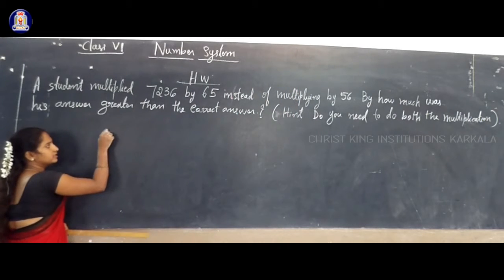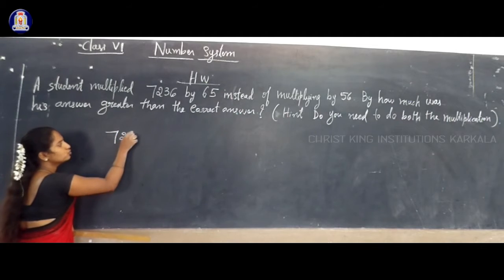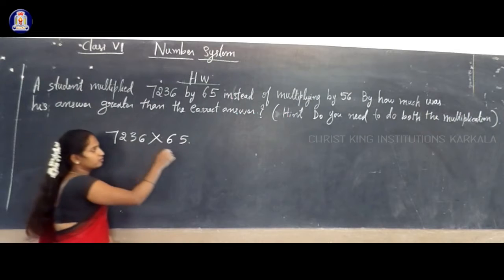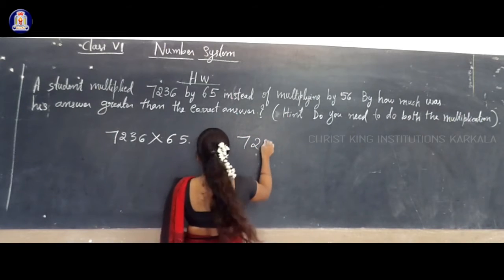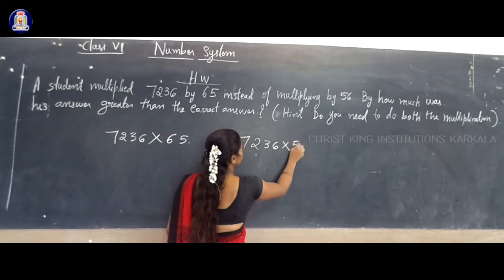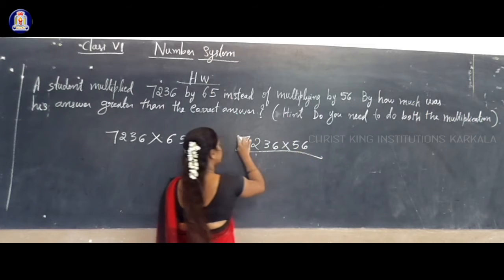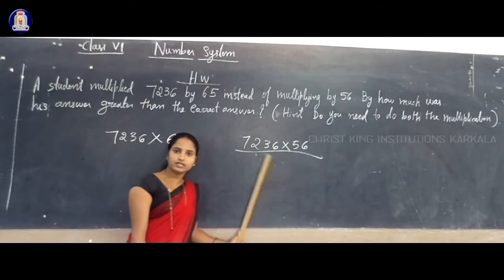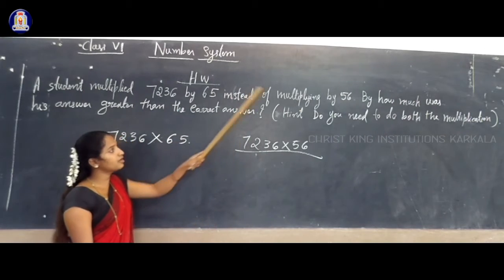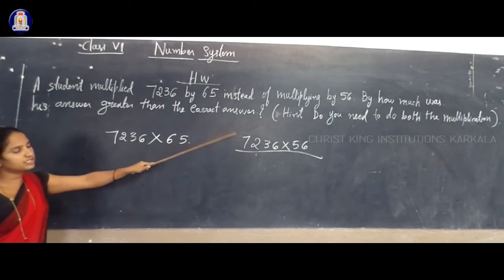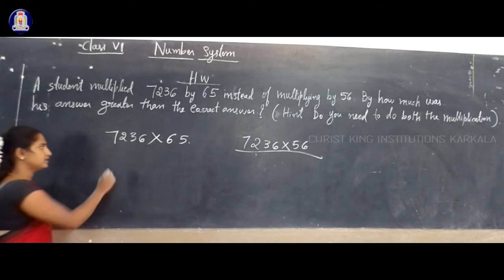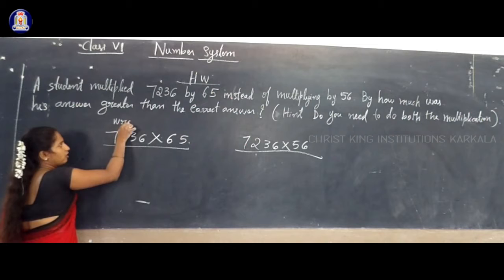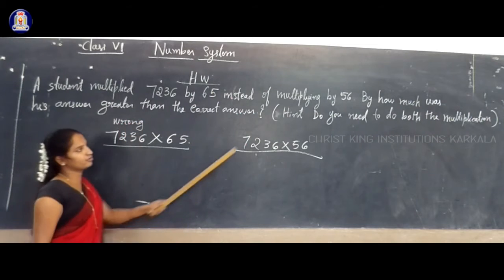So, if you have to compare, see what you have to do. This 7236 here — the student multiplied by 65. So, you have to multiply 7236 by 56. If you multiply 7236 by 56, you will get the correct answer. But instead of multiplying by 56, he multiplied by 65, so he will get the wrong answer.